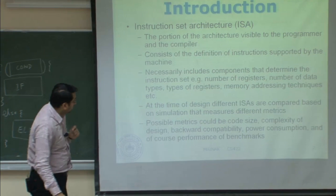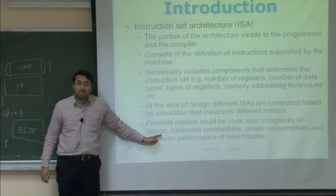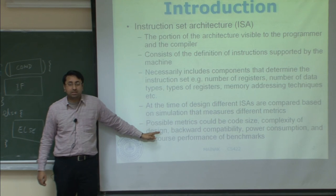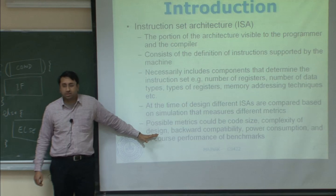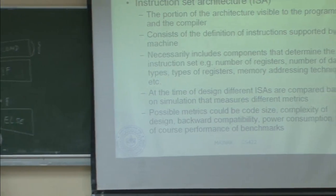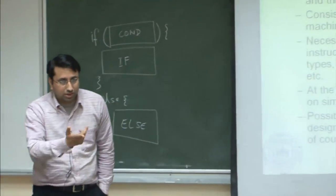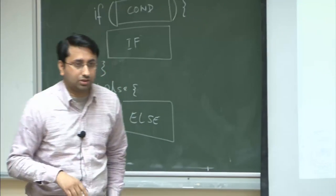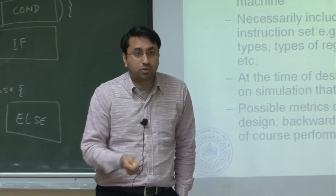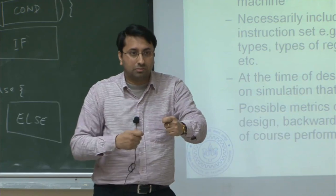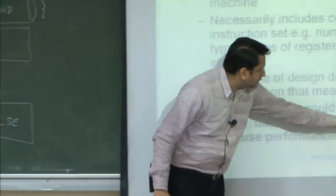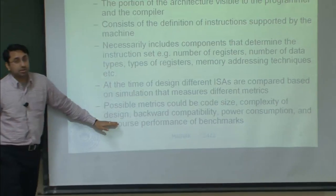The ISA is the only thing ultimately exposed to compiler designers and programmers — if you make a gross mistake here, no matter how smart the internal design is, nothing matters. Recall the string copy instruction example: offering a single byte-copy instruction and having the programmer orchestrate the loop would explode code size a little but make the design much simpler.